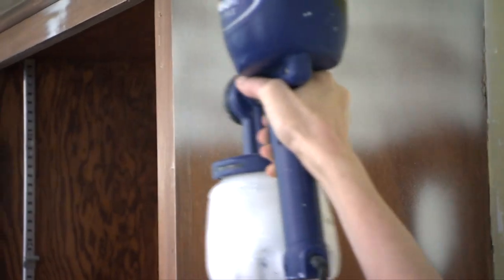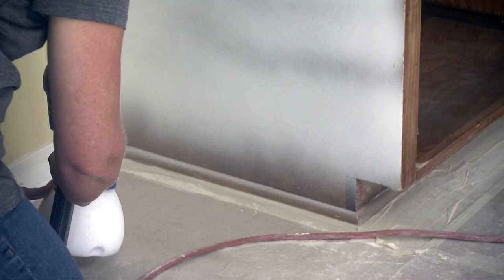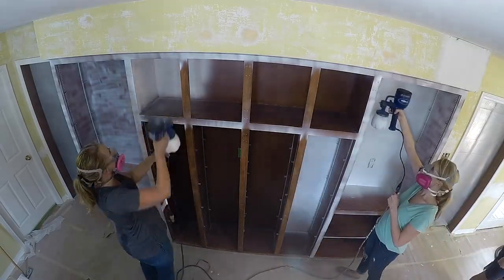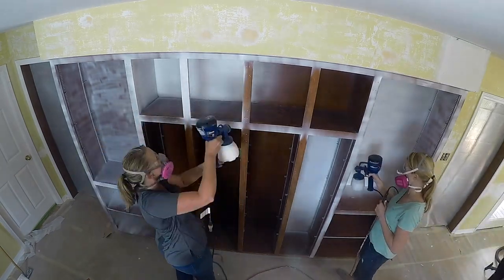We're using the same sprayer on the cabinet boxes inside. Since the floors are covered and the room is sealed, we're painting the inside of the cabinets to avoid overspray marks or the need to mask each opening.